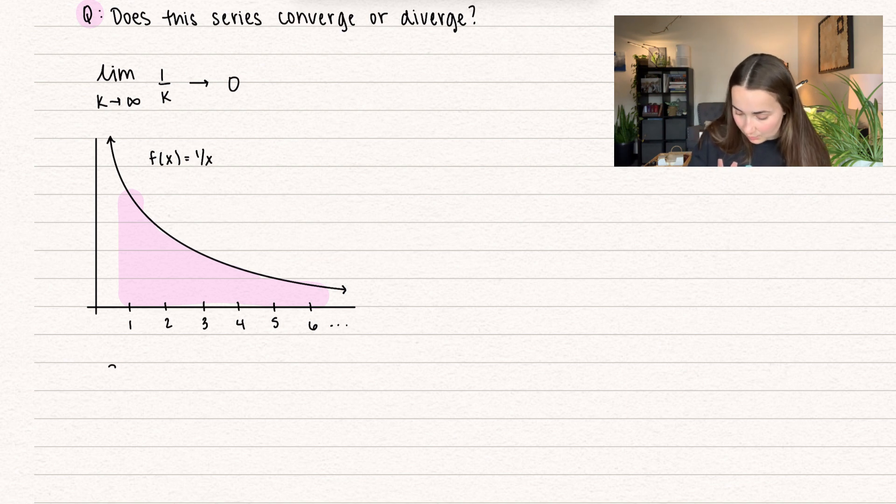So this is going to be the integral starting at 1 going all the way to infinity. But if I wrote infinity, I would have an improper integral. So I'm going to write b. And we're going to take the limit as b approaches infinity. And this is going to be 1 over x dx.